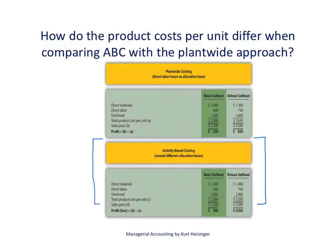Let me set up this comparison a little bit further. Let's assume that our company, Sailrite, which produces two sailboats — the basic and the deluxe — used to use the plant-wide costing approach. As a result, we were allocating overhead based on direct labor hours, using one rate plant-wide. The result of that allocation is shown here for the overhead line item — that was our overhead cost per unit for each of the products we produce.